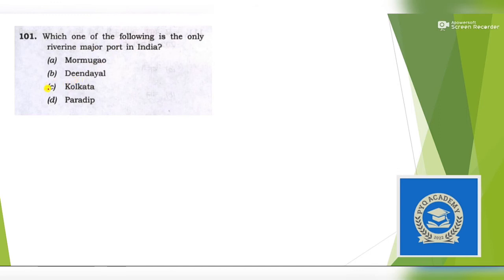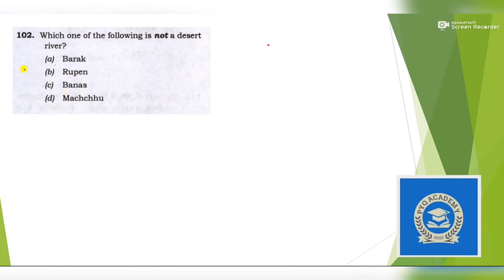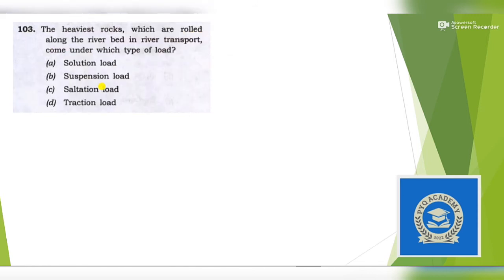Next question: Which of the following is the only riverine major port in India? Only riverine major port is Kolkata. Answer is option C. Next question: Which of the following is not a desert river? These are names of rivers you may have never heard, but you must know Barak river. This is found in the northeast states of Manipur, Tripura and then enters Bangladesh. It can never originate in a desert, so answer is option C.